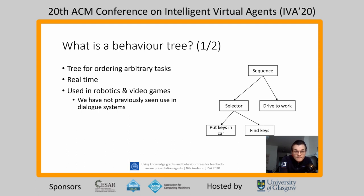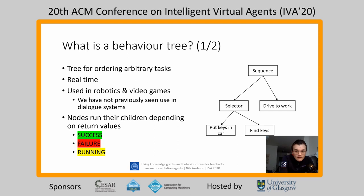A behavior tree is a tree model for ordering arbitrary tasks. They run in real time, so they aren't just a data structure — they are a representation of the actual grounding system. They have previously been used in robotics and video games for the past 20 or so years, though we have not seen much use for them in dialogue systems. A very important property of behavior trees is that nodes return three return values up the tree: success, failure, and running. Depending on these return values, nodes in the middle of the tree may run their children in a different order or run a different subset of children.